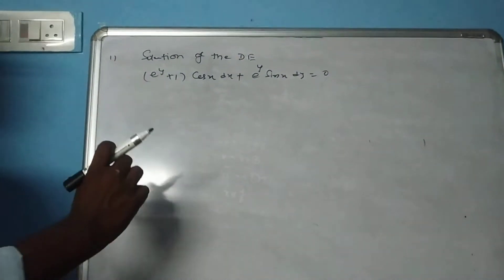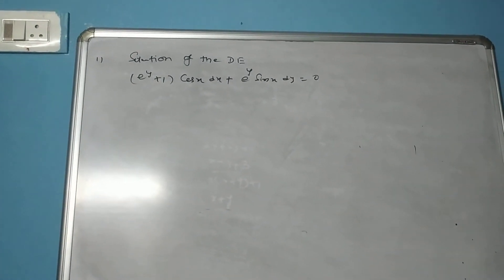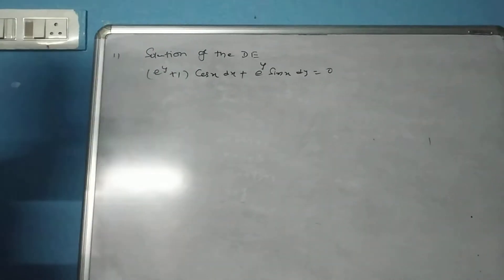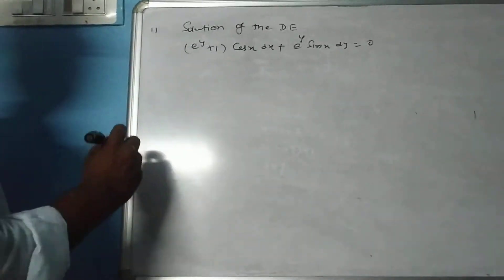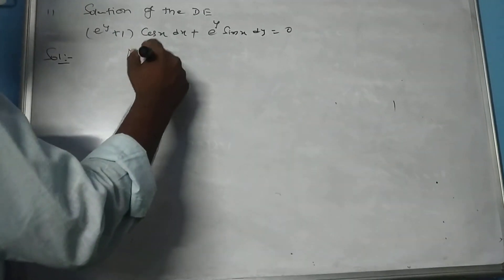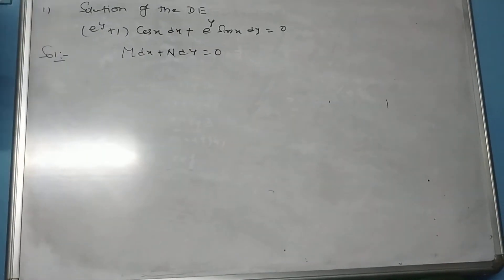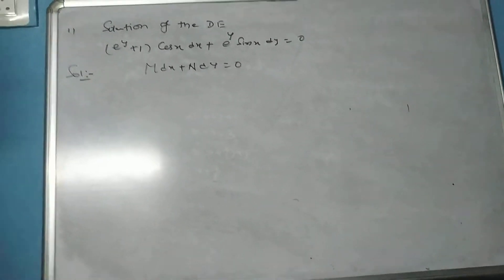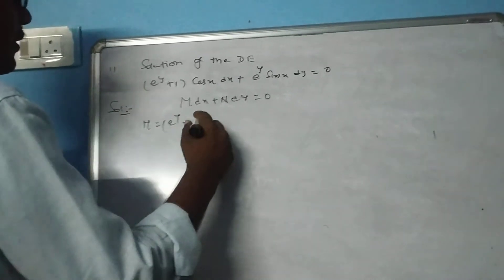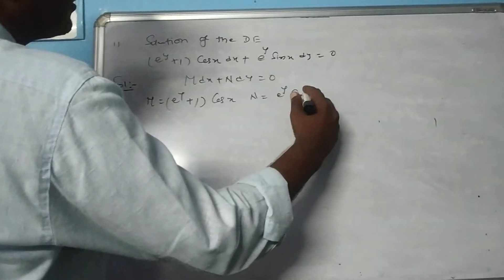Solution of the differential equation: (e^y + 1)cos x dx plus e^y sin x dy equals 0. The given differential equation is in the form M dx plus N dy equals 0, where M equals (e^y + 1)cos x and N equals e^y sin x.